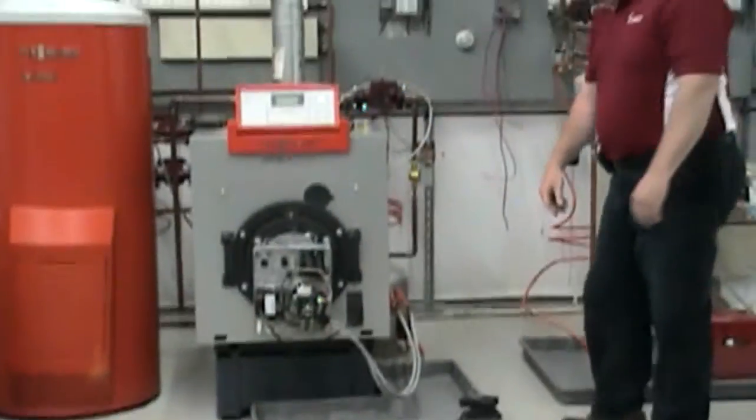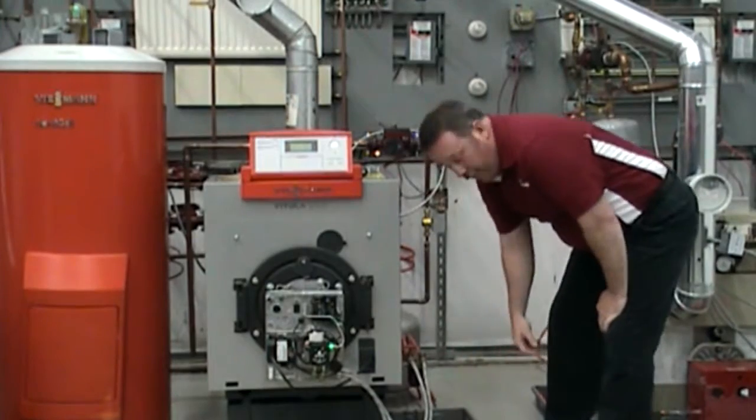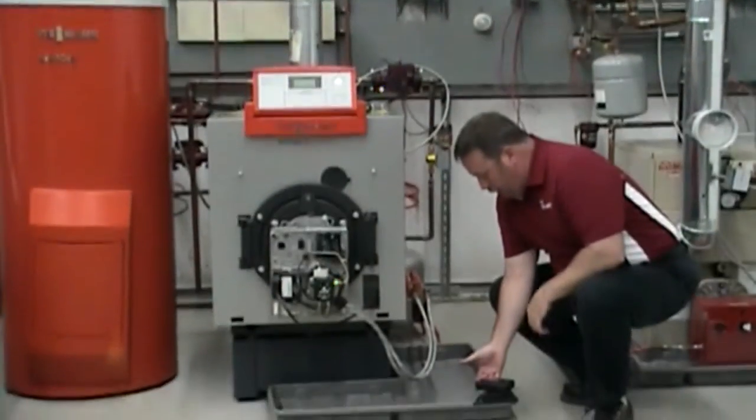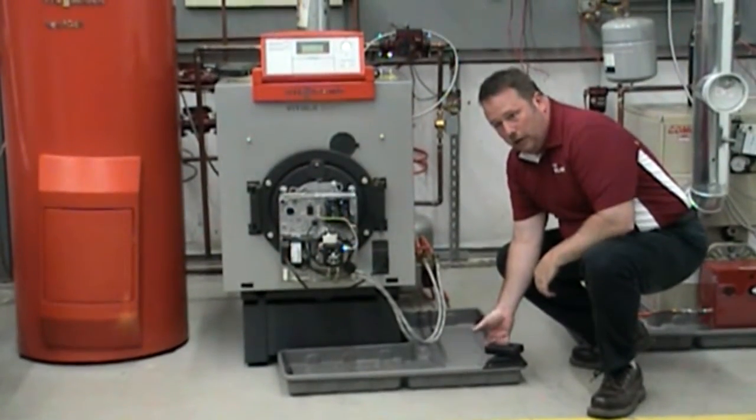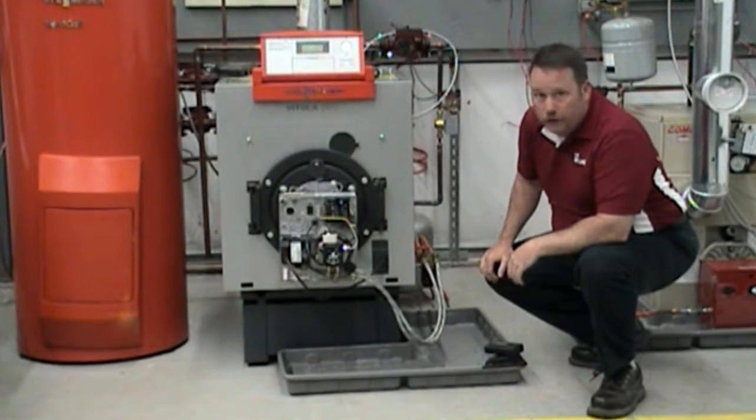So now we have the audible alarm installed. If there's ever a release of fuel, the tray begins to fill up, that alarm floats. Somebody in the building is alerted to a fuel leak before it causes any real damage.